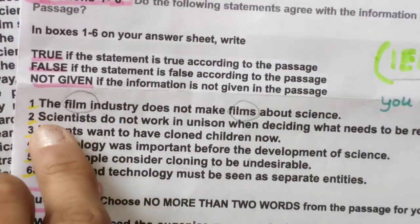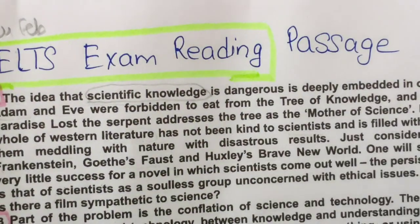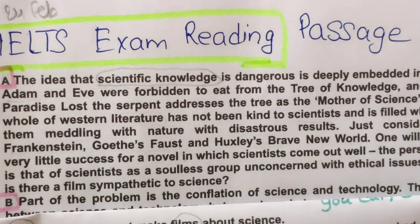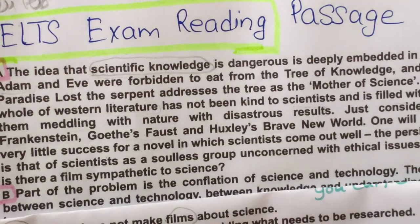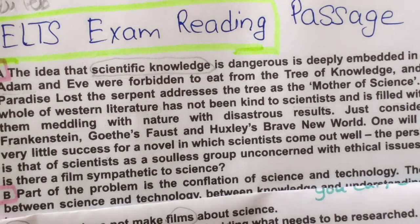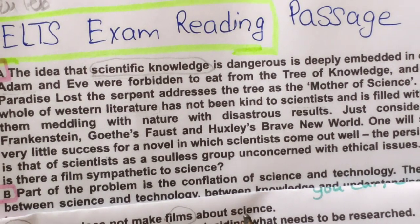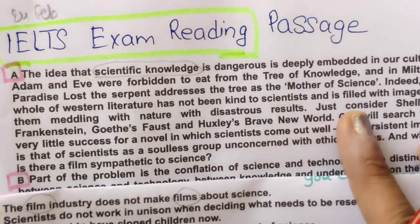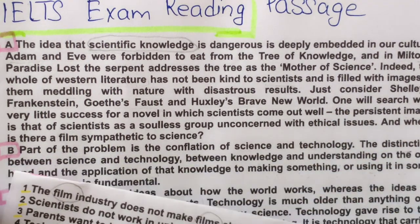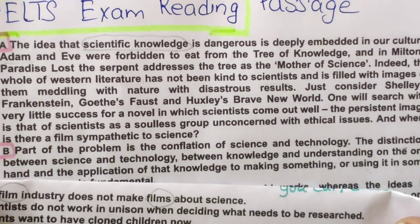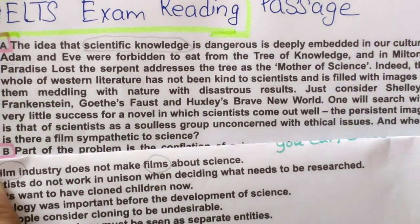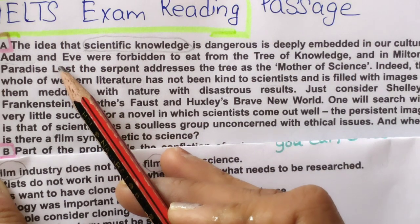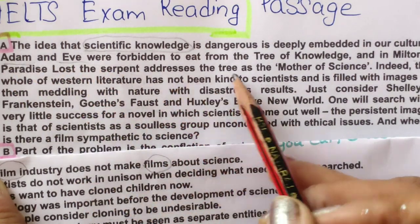Let me tell you the location. Starting from the first paragraph: it is deeply embedded in our culture. It has been kind to scientists — it is also made of film. Paradise Lost, The Serpent Address — these are names of books or literature words. It has been kind to scientists and has filled with images of them meddling with nature and disastrous results. Just consider Shelley's Frankenstein, Goethe's Faust — how many names have been given.